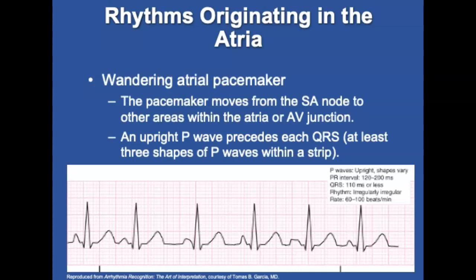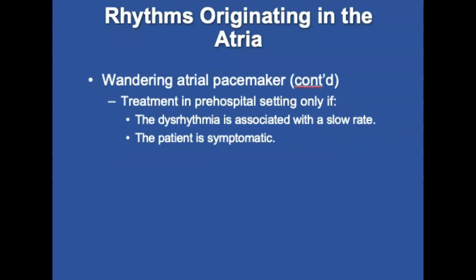The wandering pacemaker is a rhythm in which the pacemaker of the heart moves from the SA node to various locations within the atria or AV junction. The rate is usually 60 to 100 beats with a slightly irregular rhythm. An upright P wave precedes each QRS complex; however, the P wave shapes vary, indicating multiple sites of origin. A wandering pacemaker is characterized by a PRI of 0.12 to 0.20 seconds, which varies based on the complex origin. It is seen in children, older adults, and athletes. Treatment is indicated in the prehospital setting only if the dysrhythmia is associated with a slow rate and the patient is symptomatic, in which case treatment is the same as for symptomatic sinus bradycardia.